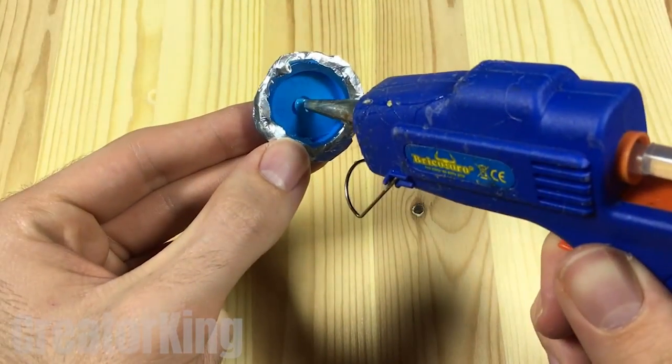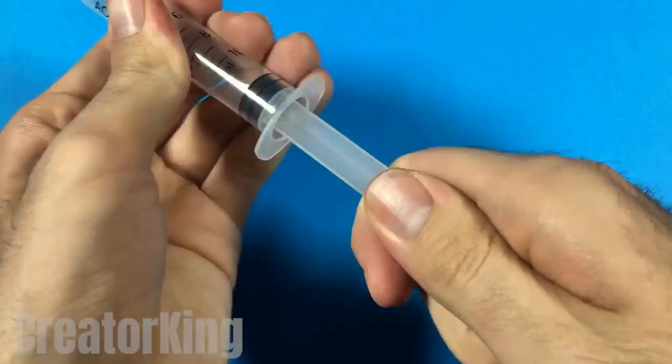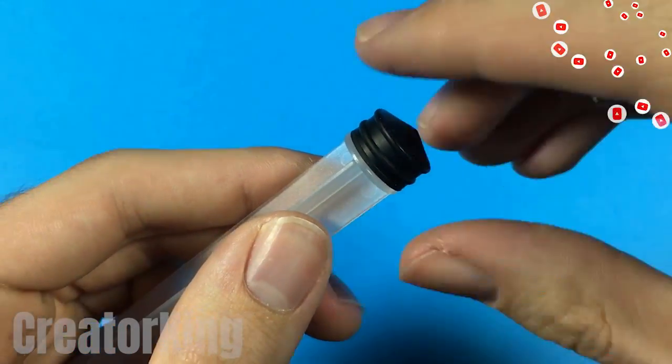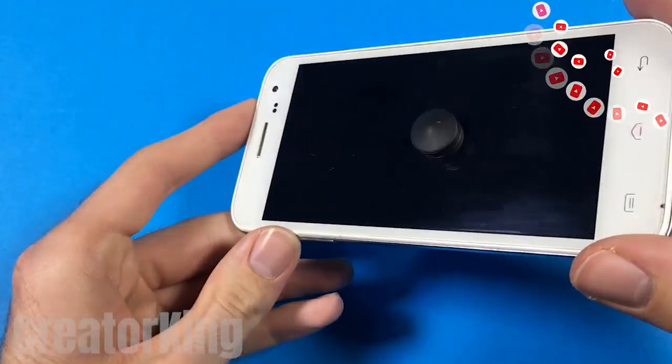Once this piece is ready place hot glue in the center of the lid. Go to the pharmacy and buy a syringe like this one.